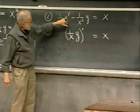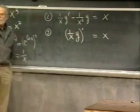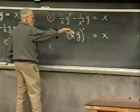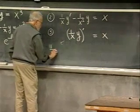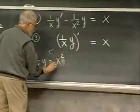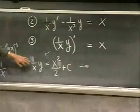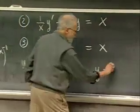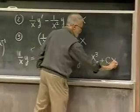Integrating both sides: (1/x)·y equals x²/2 plus C. Therefore, multiplying through by x: y equals x³/2 plus C·x. That's the solution.